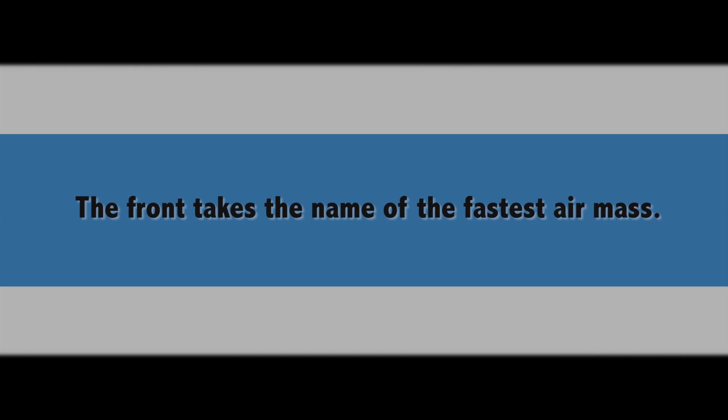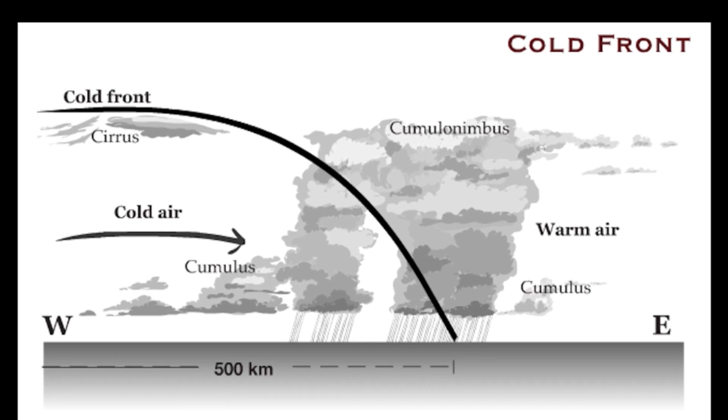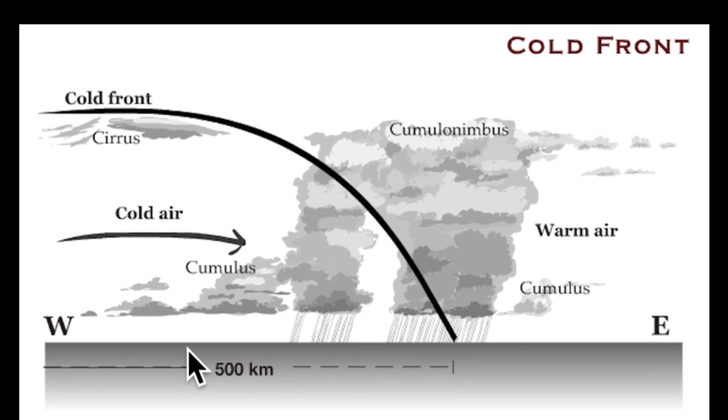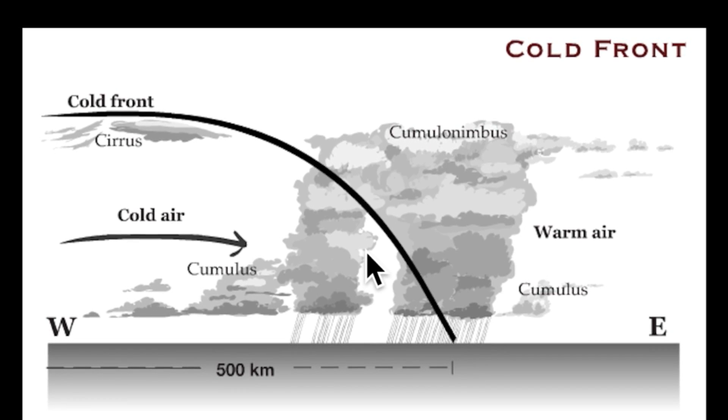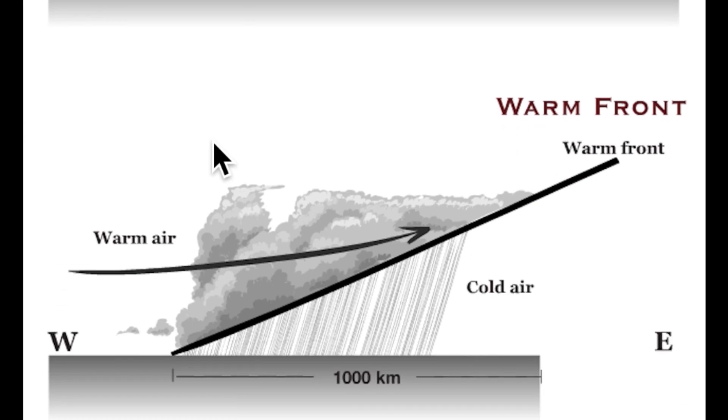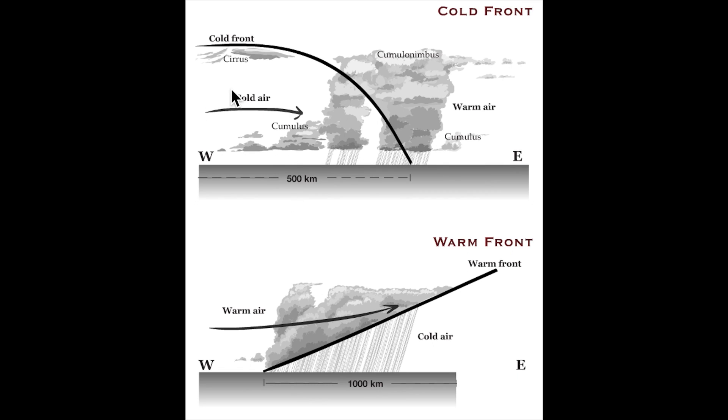Now, you name a front based on the air mass that's moving faster and overtakes the other one. So, in the top here, we see cold front. And the reason why it's a cold front is because the cold air is catching up with the warm air. And then at the bottom here, you see warm front, and that's when warm air is moving faster and overtaking the cold air. Let's take a look at the cold front first.